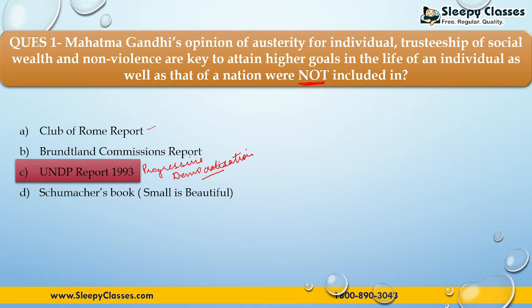The UNDP report of 1993 and 'Small is Beautiful' both reflect this concept. As I mentioned in the lecture, the idea is that an individual's peace of mind matters, and human beings should be trusted — along with social responsibility.